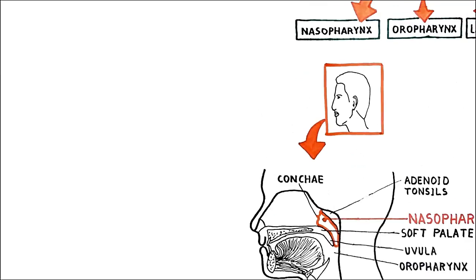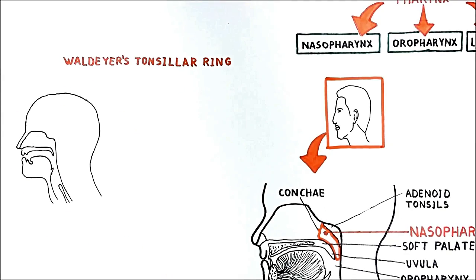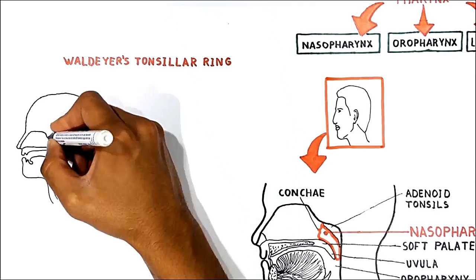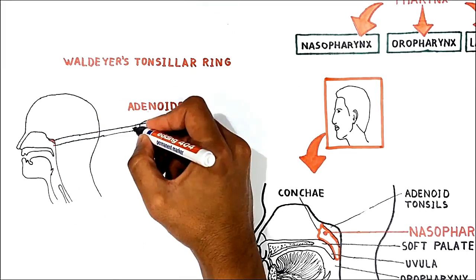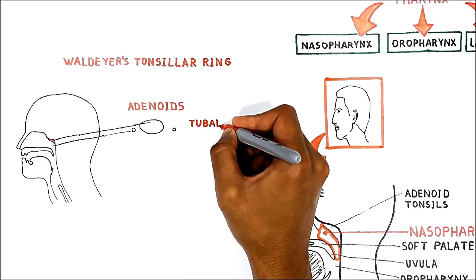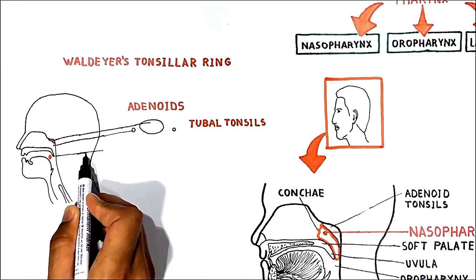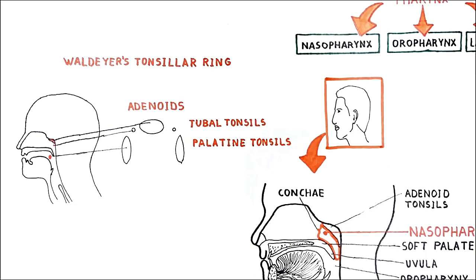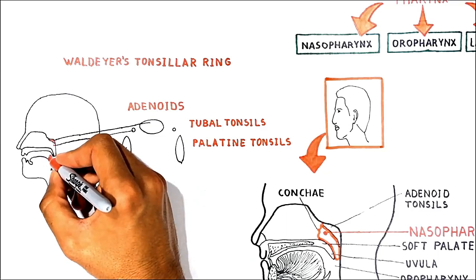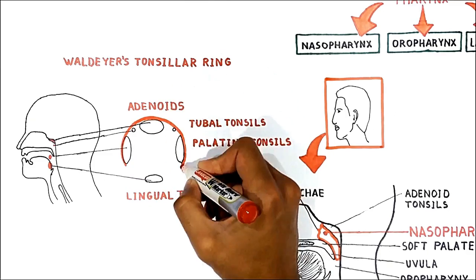The adenoids are part of the so-called Waldeyer's tonsillar ring — a ring of lymphoid tissue located in the nasopharynx and oropharynx. It includes one or two pharyngeal tonsils (adenoids), two tubal tonsils located posterior to the opening of the Eustachian tube on the lateral walls of the nasopharynx, two palatine tonsils commonly called the tonsils located in the oropharynx, and one or many lingual tonsils on the posterior tongue. All of them are part of the immune system.